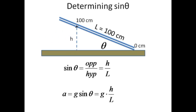In this experiment, Descartes will be rolling down an inclined track, and you will need to determine the sine of theta. Since the sine of an angle is defined as a ratio of the opposite side to the hypotenuse, we can measure the height of the lower edge of the track above the table at the 100 cm mark along the track. The height, H, is the opposite side.